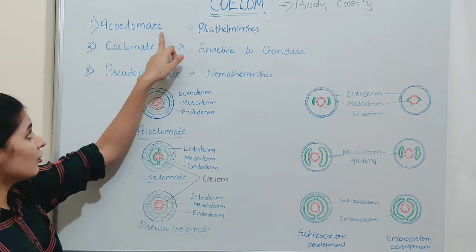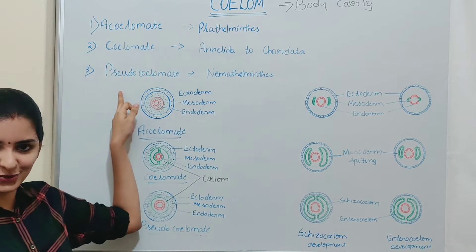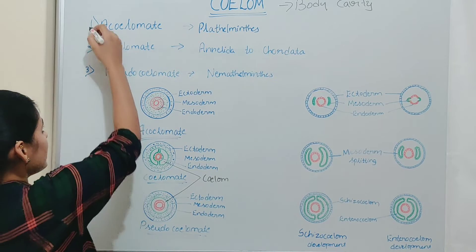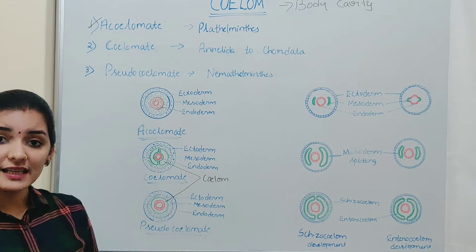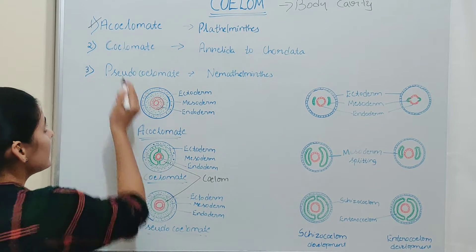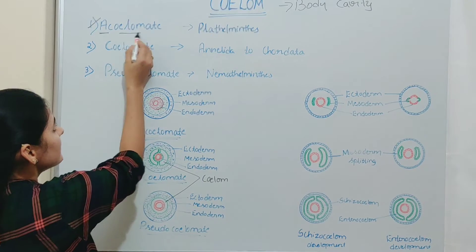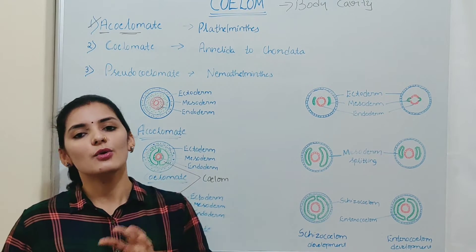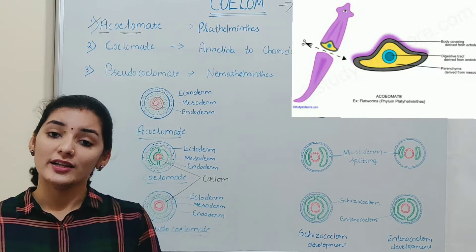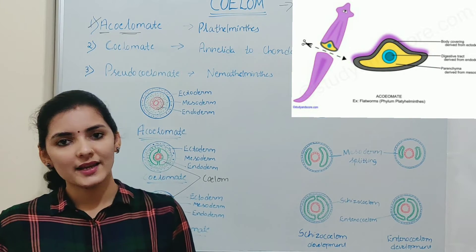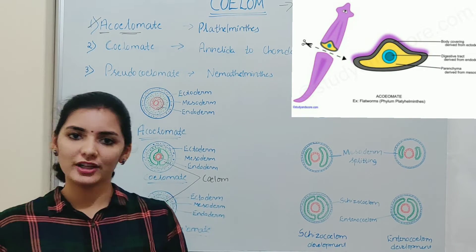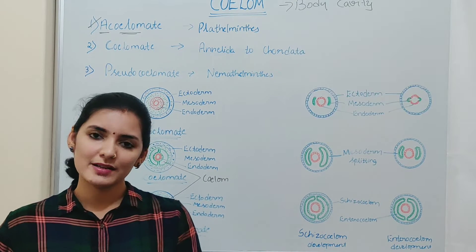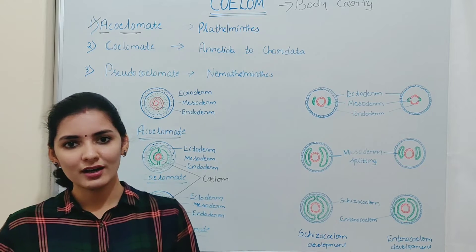That is Acoelomate, Coelomate, and Pseudocoelomate. We will discuss them one by one. First is Acoelomate. As the name indicates, 'A' means without, 'coelom' means body cavity. So these are organisms without a body cavity — in other words, the fluid-filled space between the gut and the body wall is absent in these organisms.